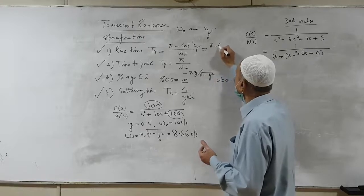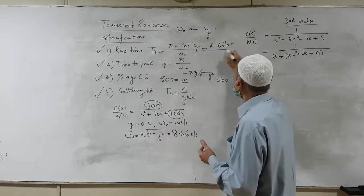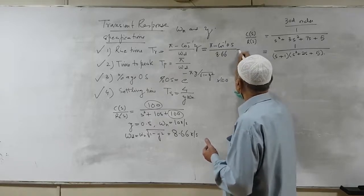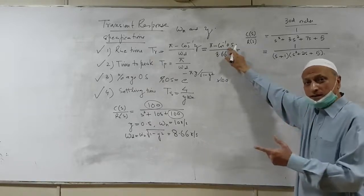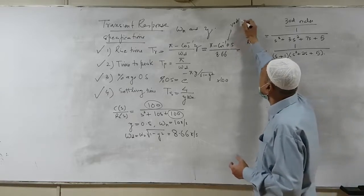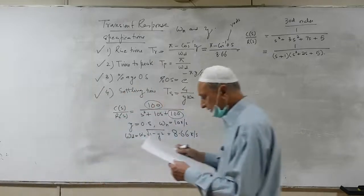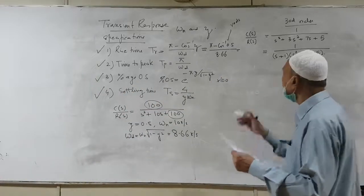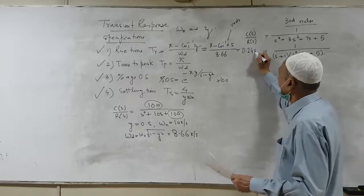In this case, the rise time is pi times cosine-inverse of 0.5 divided by omega d, which is 8.66. Remember, you have to convert the cosine-inverse result into radians — this is very important. Once you do that and calculate, it comes out to be 0.24 seconds.